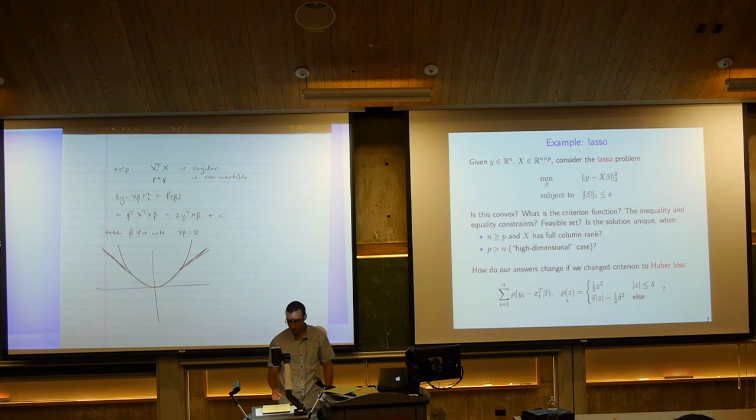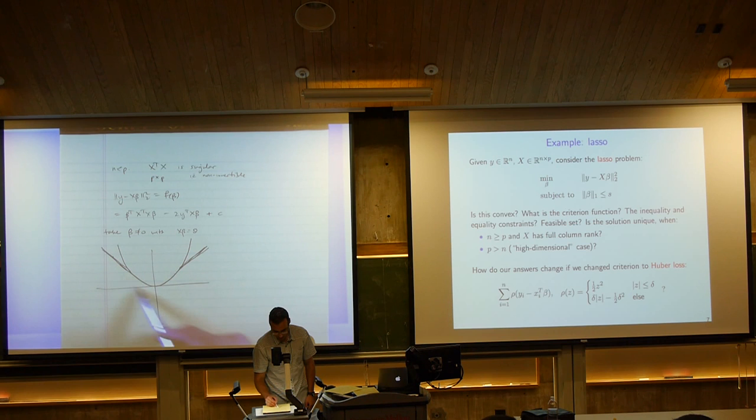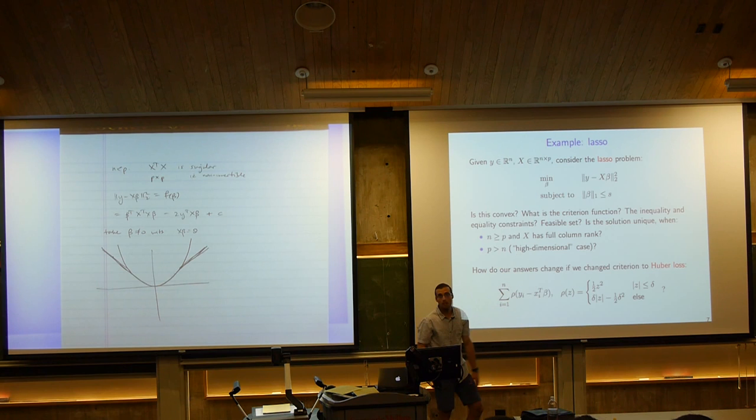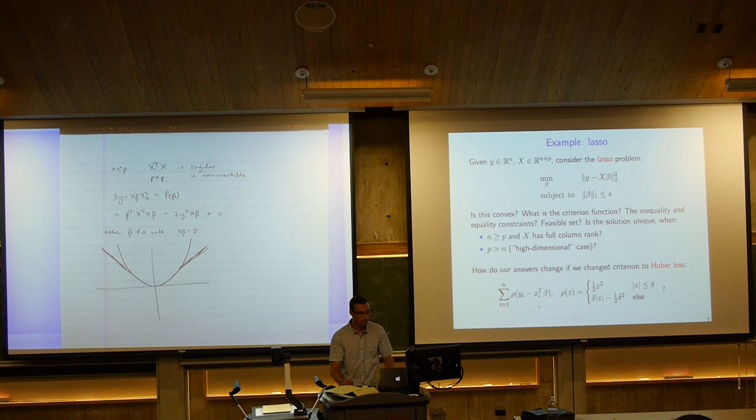This is the formal definition of Huber loss (called ρ on the slides). In statistics, this is used to make regression more robust against outliers. I'll let you think about how the uniqueness answers change if we used Huber loss instead of least squares.